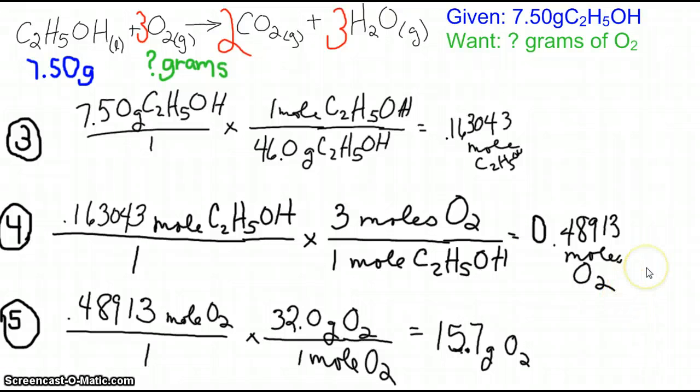Calculating the moles of oxygen, then we want to go to grams of oxygen. So, we have to remember that oxygen is diatomic. The molar mass of oxygen is 32, not 16, to give us our final answer.